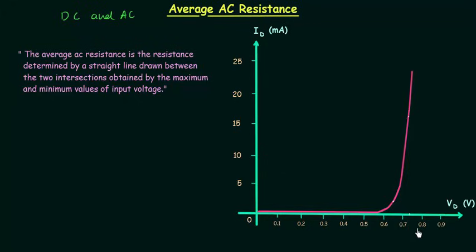When the input is large it produces a broad swing, as you can see in this figure. When input voltage is large it produces a broad swing in the characteristics, and the resistance in this region is called average AC resistance. So whenever you have to calculate the resistance of a diode in this region, you have to use the formula for average AC resistance.